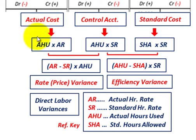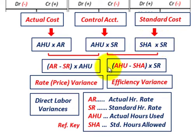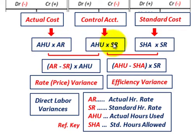For our actual cost, that's actual hours used times the actual labor rate. For our control account, that's actual hours used times the standard rate. And for our standard cost, that's standard hours allowed times the standard rate. Our rate or price variance is the difference between our actual rate and standard rate, times actual hours used. Our efficiency variance is the difference between actual hours used and standard hours allowed, times the standard rate.